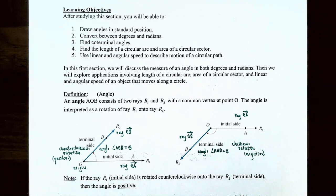In this section we're going to discuss the measure of an angle in both degrees and radians, and then we're going to explore some of the applications involving length of a circular arc, area of a circular sector, and also linear and angular speed of an object that moves along a circle.